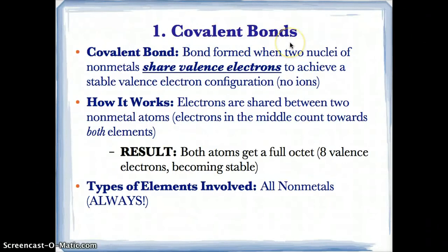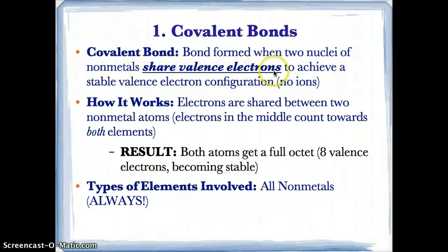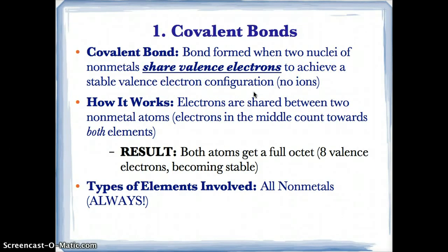First, let's talk about what covalent bonds are. Covalent bonds are bonds formed when two nuclei of nonmetals share valence electrons to achieve a stable valence electron configuration. The key word here for covalent bonding is 'share.'